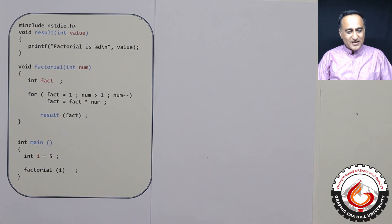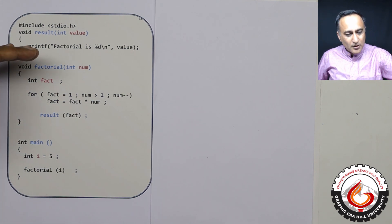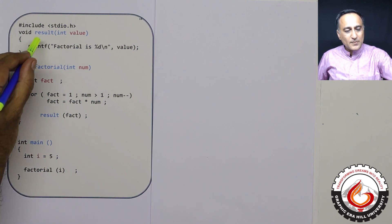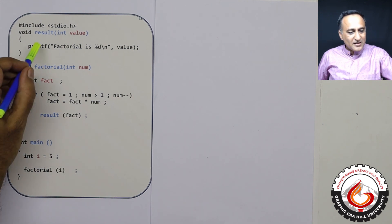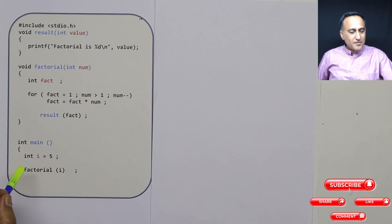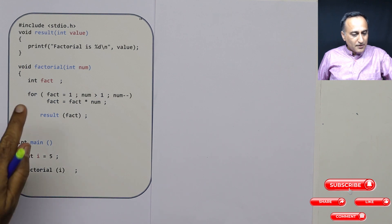Let's try to understand a very simple program to calculate the factorial of a number. I have purposely written it from top to bottom, putting main at the bottom, so that I don't have to declare prototypes for result and factorial. If you write the calling functions on top and then write main at the bottom, you do not need any prototype declaration.